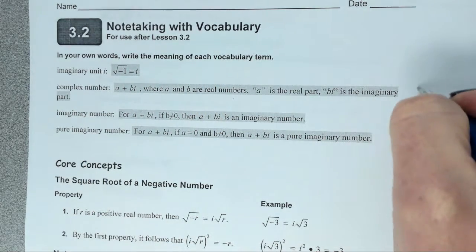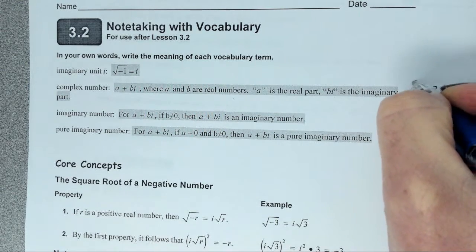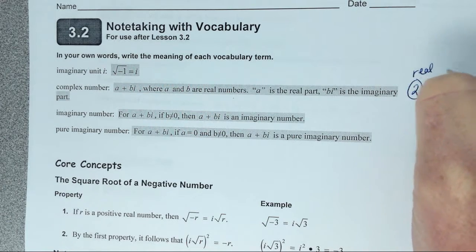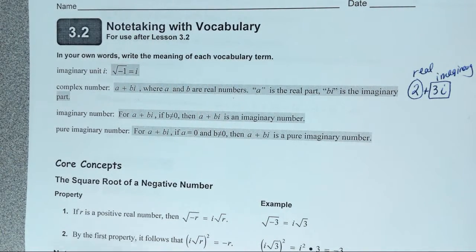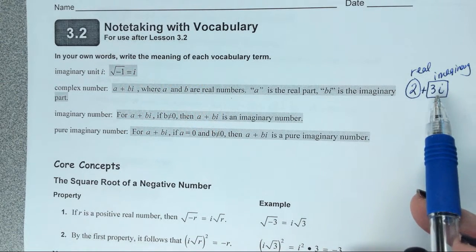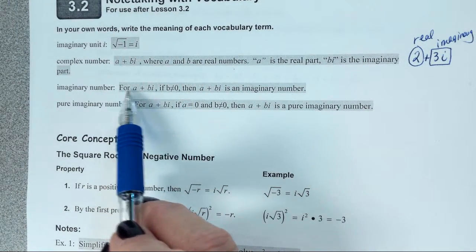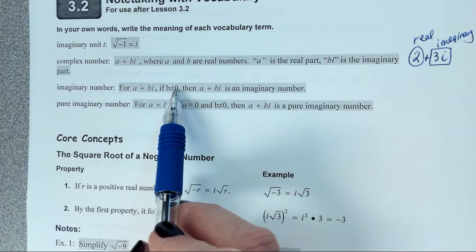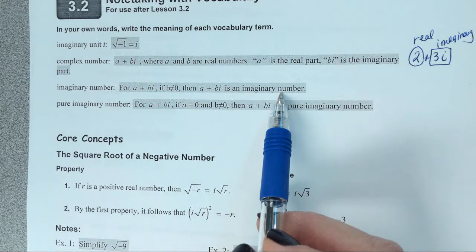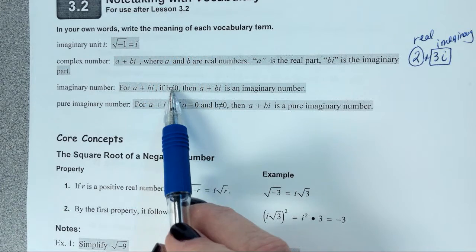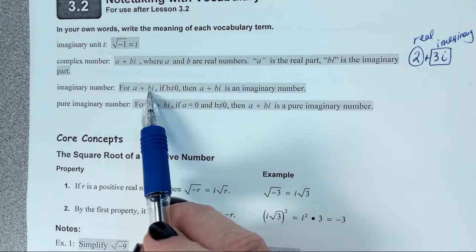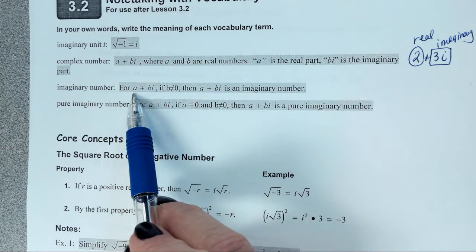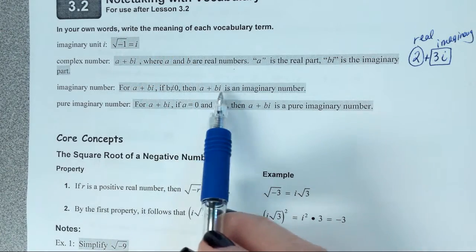If I have a number like 2 plus 3i, this 2 would be considered the real part, and this 3i would be considered the imaginary part. When we put A plus Bi together, as long as B does not equal 0, then A plus Bi is an imaginary number. The reason B cannot equal 0 is that 0 times an imaginary number is going to be 0, so we are just left with the real part and it is not going to be imaginary anymore — you're just back to the real numbers.